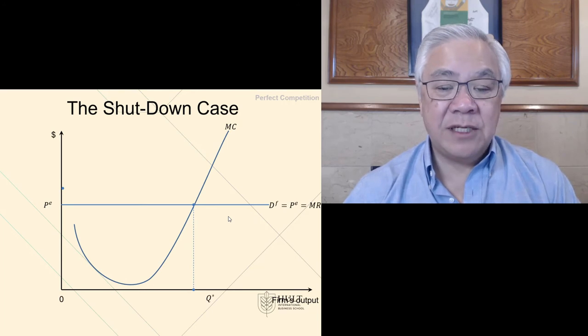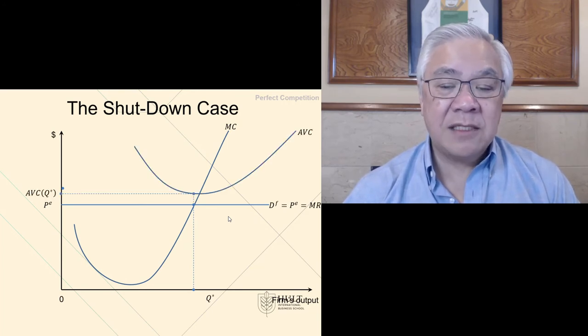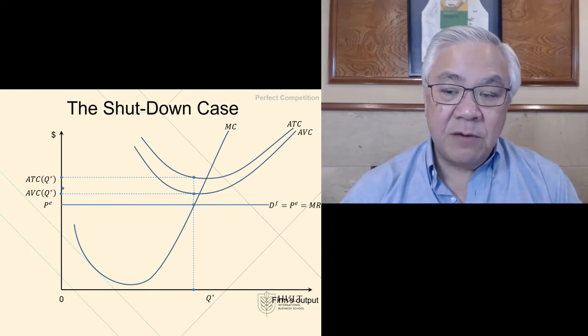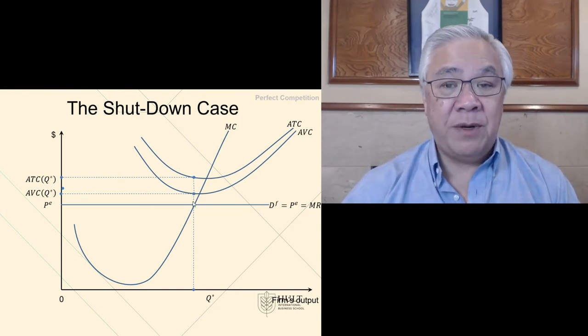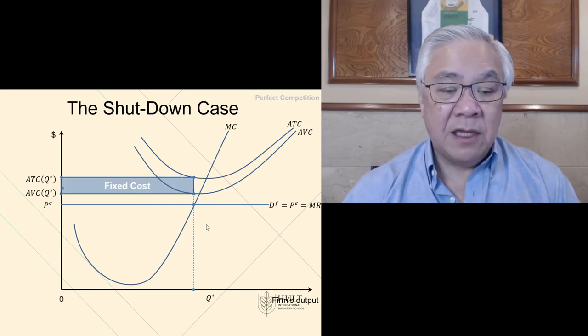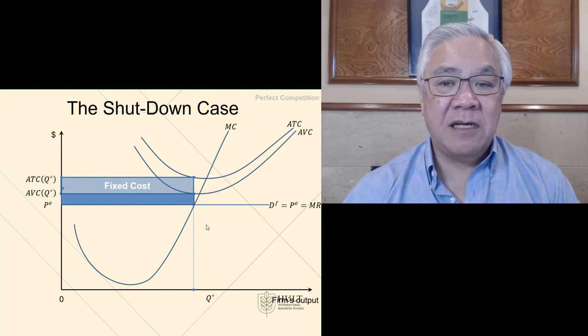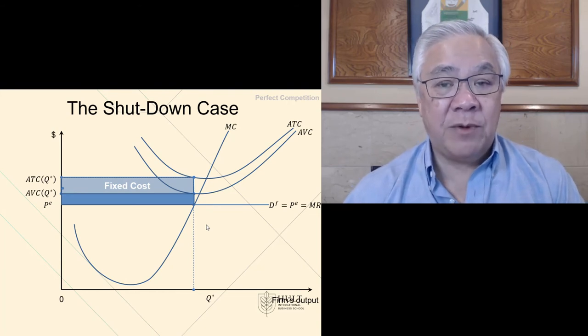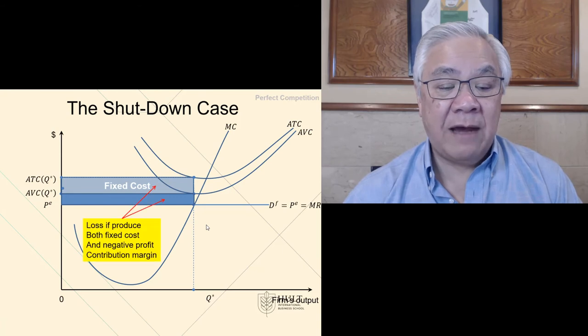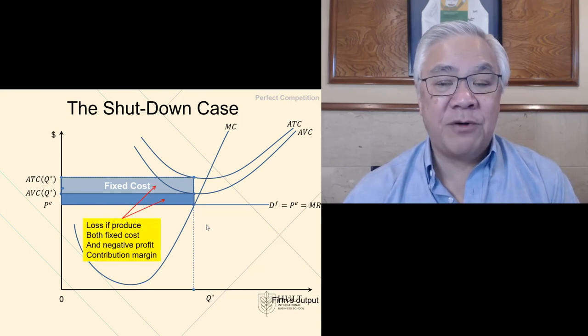What is the second situation? Here is the marginal cost, here are the curves, but notice in this case, the average variable cost is also above marginal revenue. Now we're in trouble because we have loss based on fixed costs and loss based on the gap between our variable cost and our marginal revenue. So therefore, we have double trouble. We have fixed cost losses and the negative profit margin.